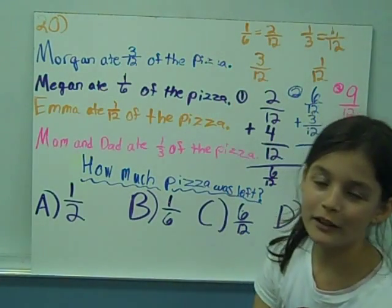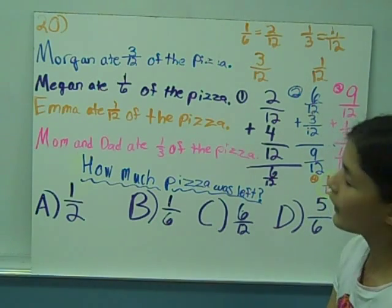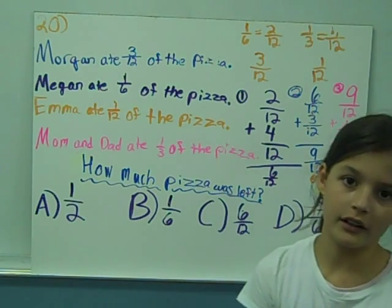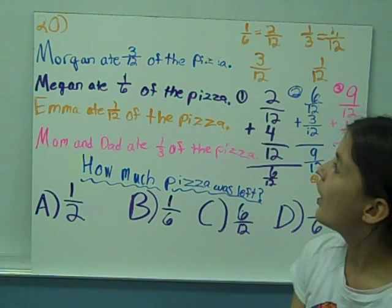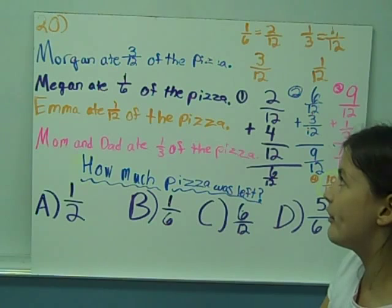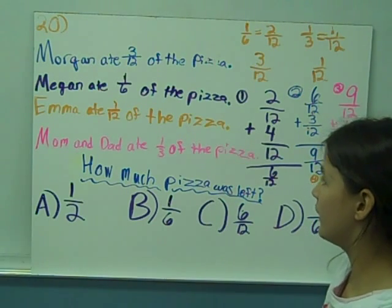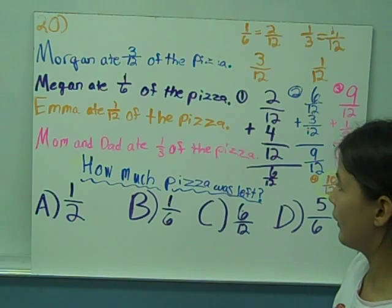I am another member of the Creative Compacted Math Group, and I have problem 12. Morgan's family ordered a large pizza for lunch. Morgan ate 3 twelfths of the pizza, Megan ate 1 sixth of the pizza, Emma ate 1 twelfth of the pizza, and their parents ate 1 third of the pizza.